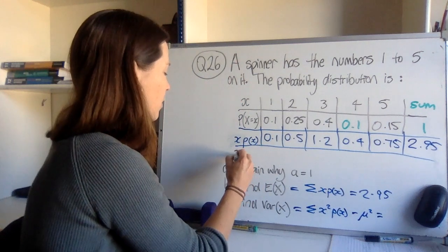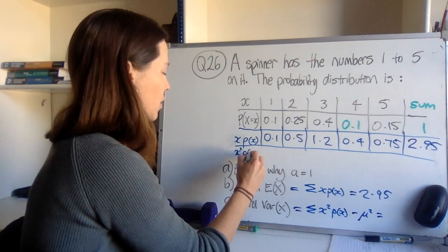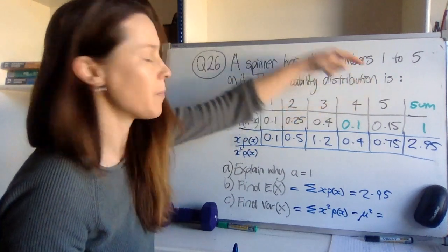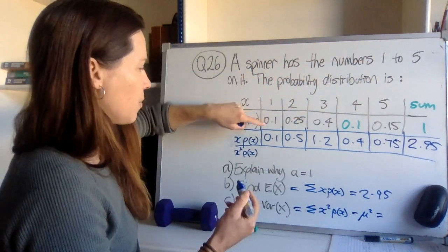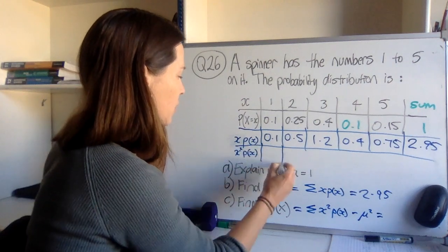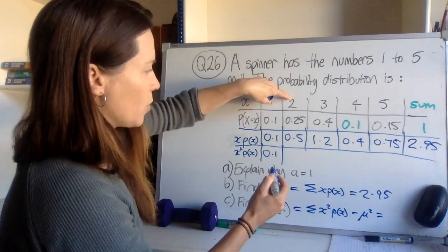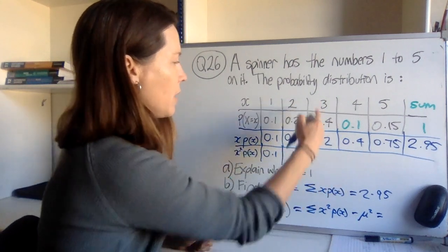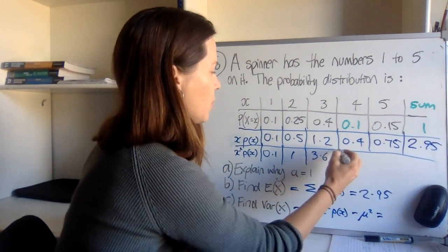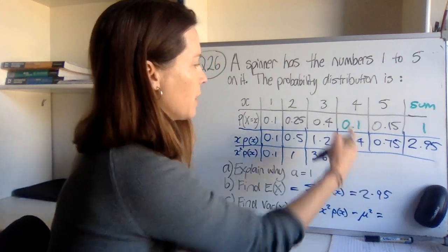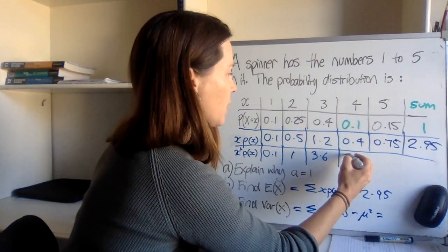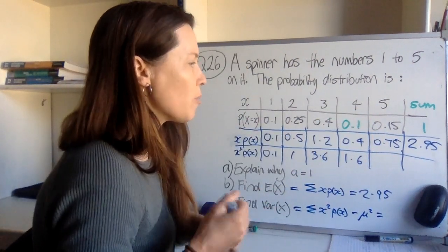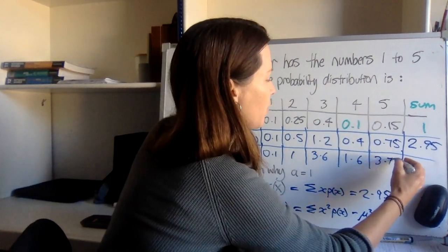I'm going to add a row and write down each score squared multiplied by its probability because these numbers are nice and easy to square. 1 squared is just 1 multiplied by 0.1, it's still 0.1. 2 squared is 4 and 4 lots of this is 1. 3 squared is 9, 9 multiplied by 0.4 is 3.6. 4 squared is 16 multiplied by 0.1 is 1.6. 5 squared is 25 multiplied by its probability gives you 3.75.